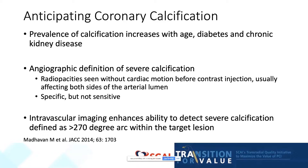risk factors that must be considered are age, diabetes status, and the presence of chronic kidney disease. The angiographic definition of severe calcification is one in which radial opacities are seen without cardiac motion before contrast injection, usually affecting both sides of the lumen. This is highly specific, but not quite sensitive.